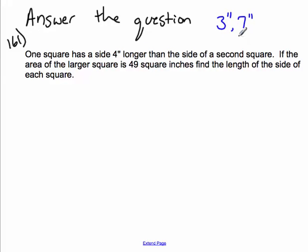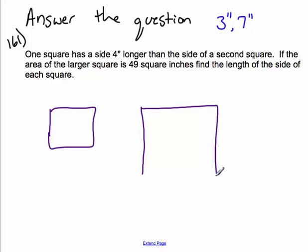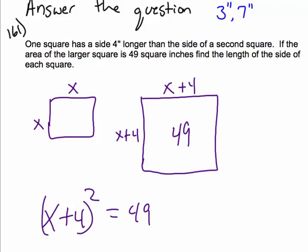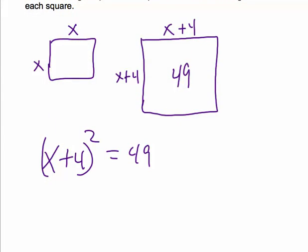Okay, last one, and we'll be done with chapter 5. Answer the question. One square, got to draw the square, bam, they say square, draw it, has a side 4 inches longer than the side of a second square. Let's draw the other square bigger, right? If this is x, well, this is x plus 4, right? x plus 4. If the area of the larger square is 49 inches, okay, so x plus 4 squared is equal to 49 inches. Find the length of the side of each square.